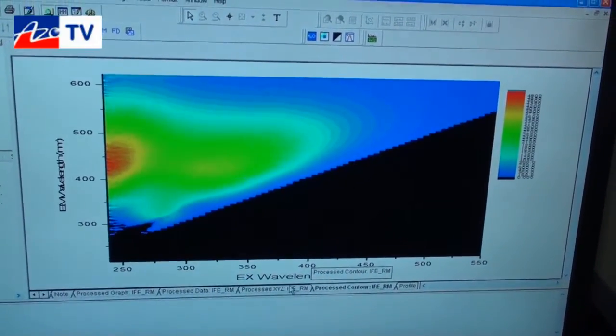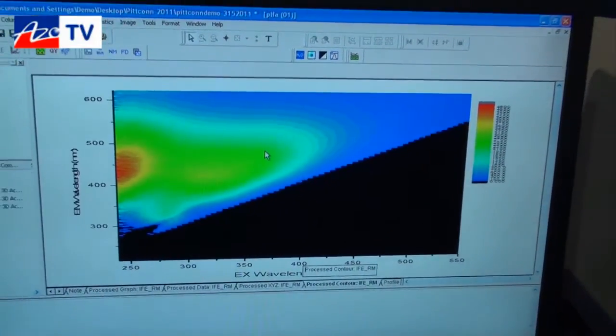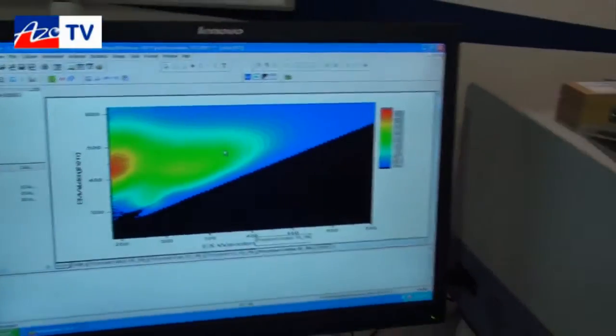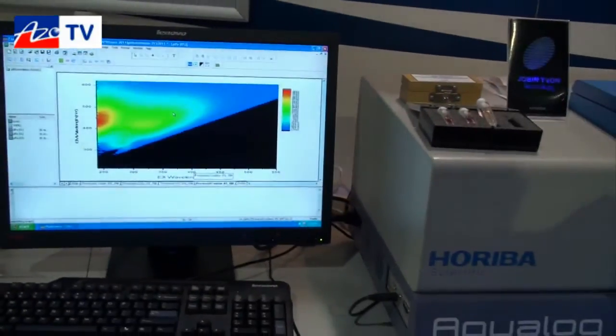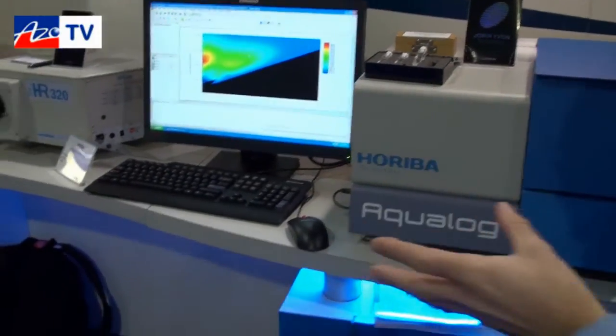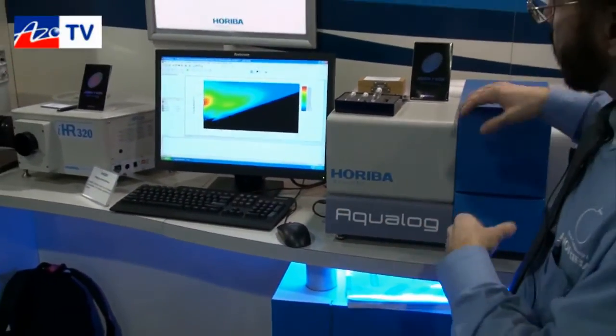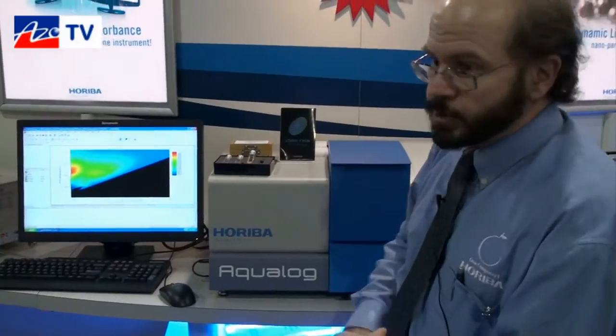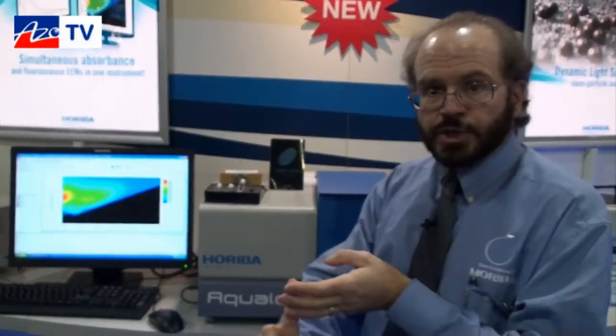So again, just as an overview, this is the first system to do true simultaneous absorption fluorescence. It's the first system that uses a CCD so it can acquire data 100 times faster, and it's the first system that employs inner filter effect correction, Rayleigh masking, and normalization to quinine sulfate standard units or Raman scattering units for a quantitative analysis that allows you to do true validated inter-laboratory comparisons.